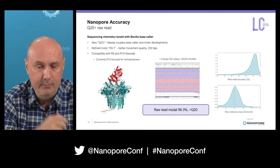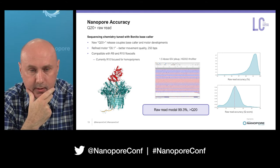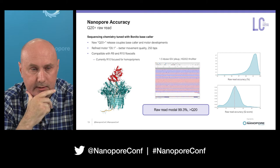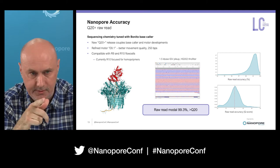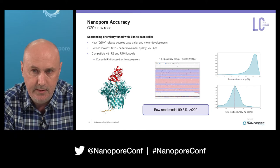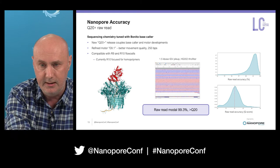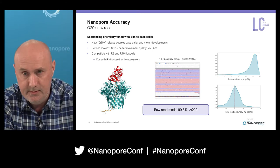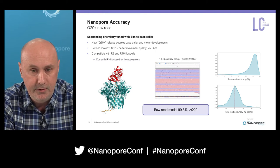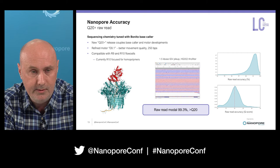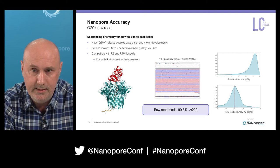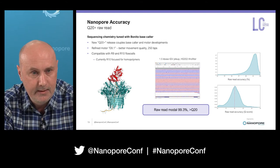The chemistry that's just coming out now, which has been in early release to our developer community, is what we call Q20+. I've called it Q20+ because we think with further iterations on software it will improve more. As the name suggests, it gives a Q20+ modal accuracy — you can see the graphs on the right-hand side. A substantial fraction of reads are above Q20, that's why it's Q20+, and I think it will shift further to the right. It's highly performant on homopolymer performance through R10. R10 is the pore that has a longer reader section, and R10 is now outperforming R9 across the board. We're now getting modal 99.3% or a little bit higher on this chemistry, and the intention is to make this chemistry more broadly available.